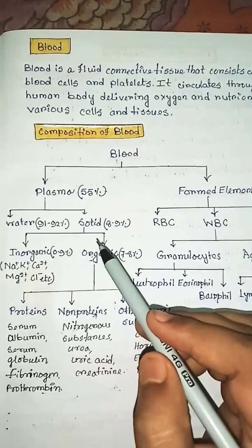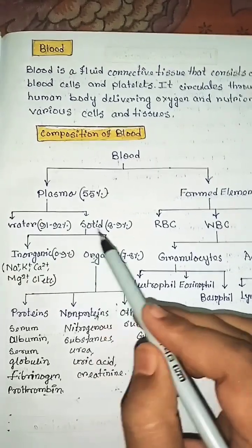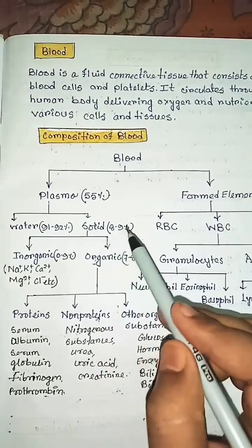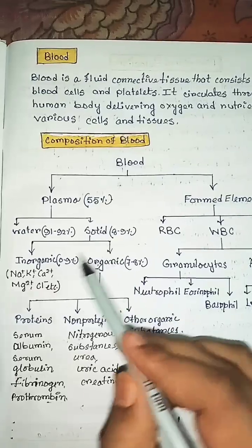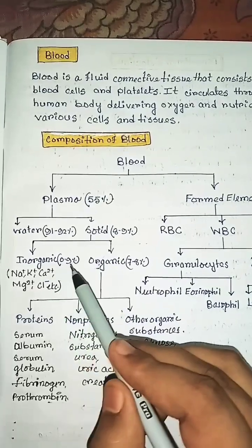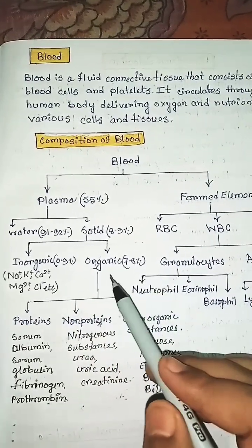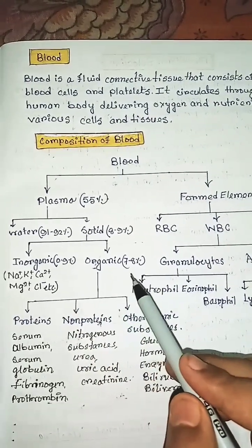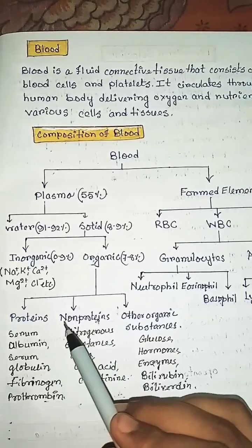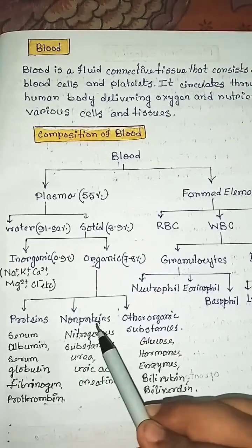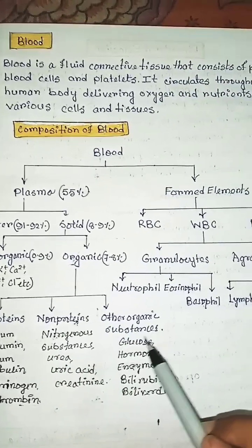Plasma contains two components: water and solid. Solid substances are divided into two components: inorganic components and organic components. Organic components are divided into three categories: proteins, non-proteins, and other organic substances.